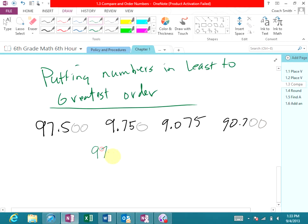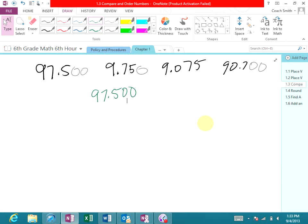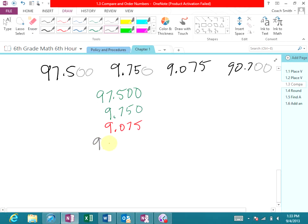Now I'm going to stack them vertically. So I'm going to go 9.7500, then I'm going to put 9.750, then I'm going to put 9.075, then I'm going to put 9.0, oops, got that decimal out of place. Make sure you line those decimals up. All right, so there they're lined up.